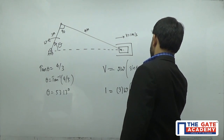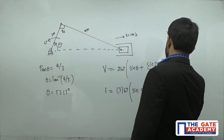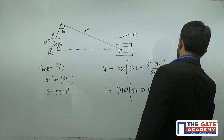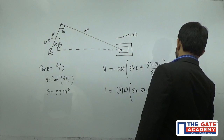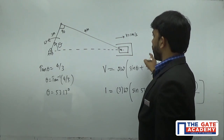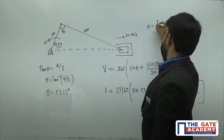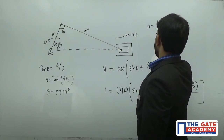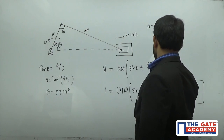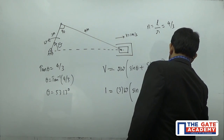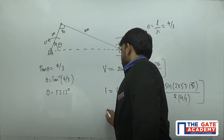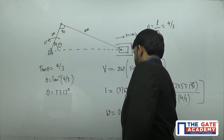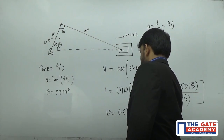Substituting: sin(53.13) + sin(2 × 53.13) divided by 2n, where n is the obliquity ratio — the ratio of the length of the connecting rod to the radius of the crank. The connecting rod length is 4 and crank radius is 3, so n = 4/3. Solving gives the angular velocity ω = 0.536 radians per second.